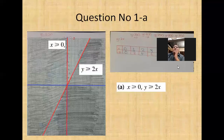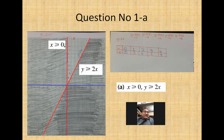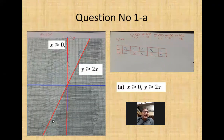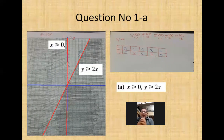Now you can see the complete question. For x ≥ 0, the vertical line has its crocodile's mouth towards x, so the right side is required — I shaded the left. For y ≥ 2x, the crocodile's mouth is towards y, so the area above this line is required — I shaded below. This white unshaded area satisfies both inequalities. Let's go to the next question.